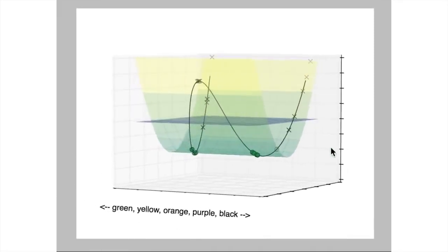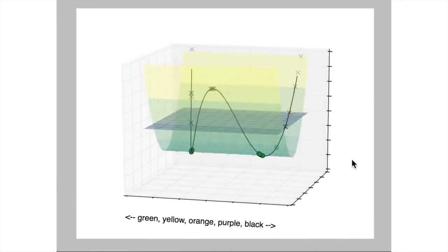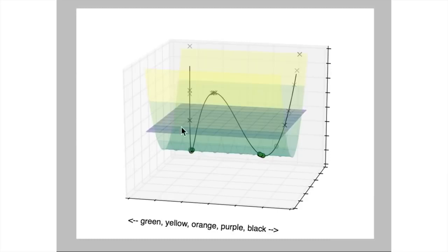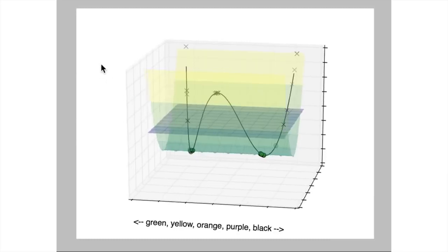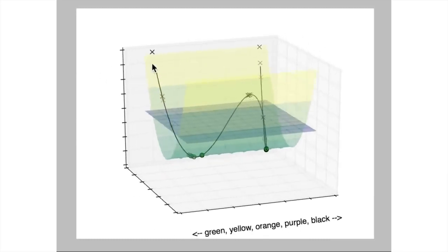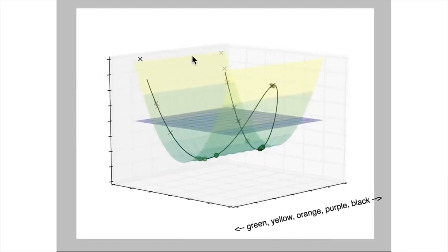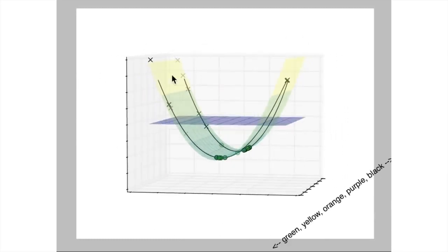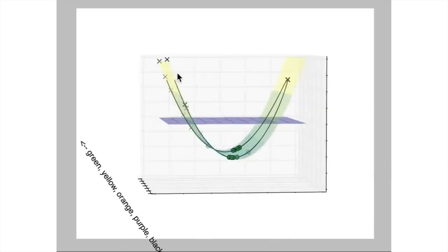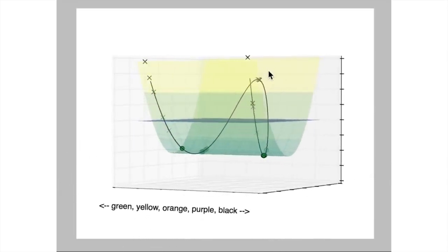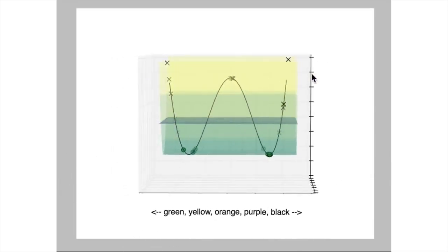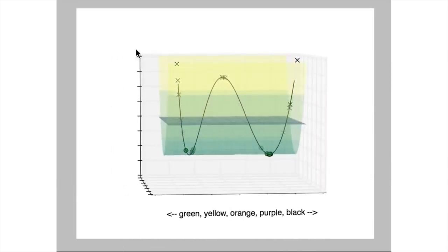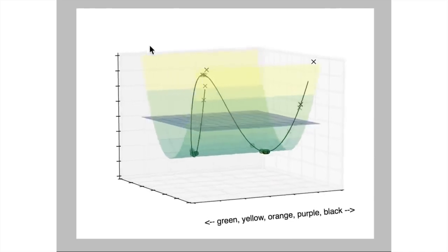That is pretty powerful stuff. This is what support vector machines do — they take and find the best slice that separates out two groups of data, and if your data is hard to separate, you can warp and twist your space until you find a way to separate it.